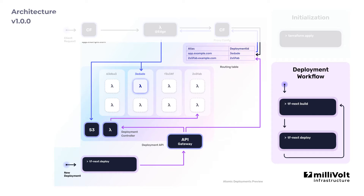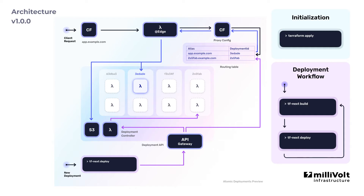The API itself is fully secured and can only be accessed with AWS credentials. After the deployment is done, a unique deployment alias domain is assigned to it. With this alias domain, you can then directly visit the new deployment from your browser. Now let's see it in action and how all of this works together.